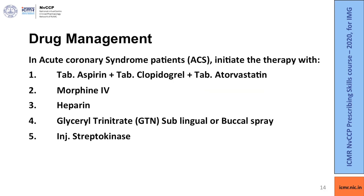Coming to drug management of acute coronary syndrome: there are two mainstays of treatment at your level. First, relieve pain with drugs like morphine and glycerol trinitrate. Second, give antithrombotic therapy in the form of aspirin, clopidogrel, and atorvastatin, or fibrinolytic and anticoagulant therapy in the form of streptokinase and heparin.